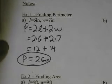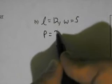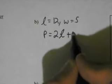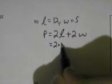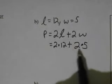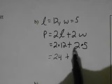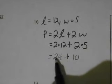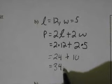Not so bad. Let's see a second example. Example B: the length will be 12 and the width will be 5. Again, we need our formula — perimeter equals 2 lengths plus 2 widths. So 2 times the length, which is 12, plus 2 times the width, which is 5. Multiply before you add: 2 times 12 is 24, plus 2 times 5, which is 10. 24 plus 10 gives us a perimeter of 34 inches.